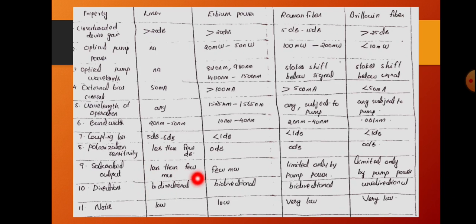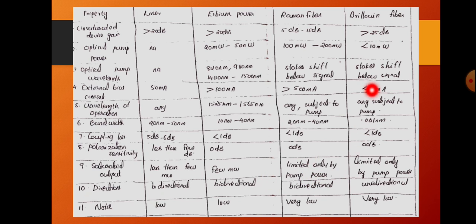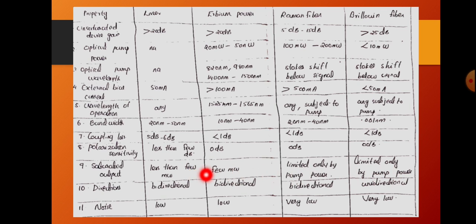For noise, in the case of the laser noise is very low. For erbium fiber the noise is also very low. For Raman fiber the noise is very low, and similarly for Brillouin fiber the noise is also very low. Raman fiber and Brillouin fiber noise will be very low compared to erbium fiber and laser.